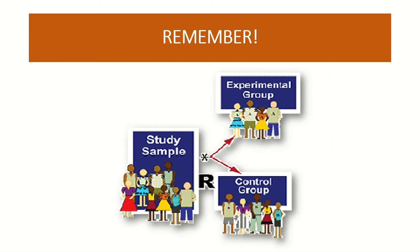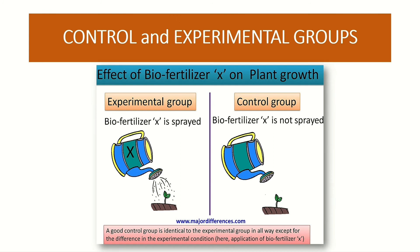Take a look at this illustration. After randomly selecting your samples, you would have to randomly assign them as to whether they go to the experimental group or to the control group. This is to ensure that aside from random sampling, we also have random assignment — because we want the conditions of the experimental and control groups to be the same. In the experiment on the effect of biofertilizer on plant growth, the experimental group clearly receives the independent variable, while the control group does not. A good control group is identical to the experimental group, except that the experimental group receives the independent variable.